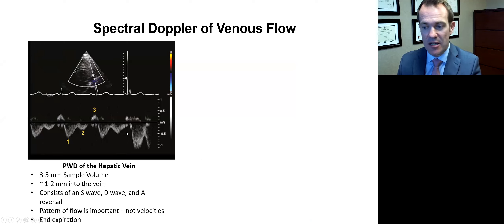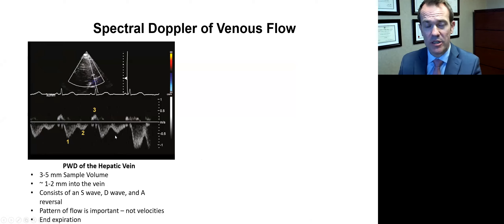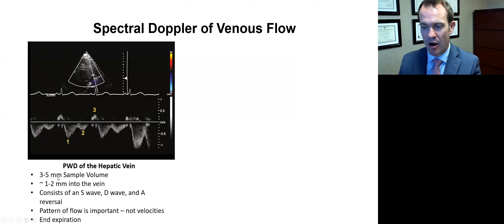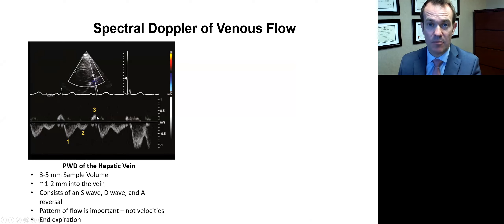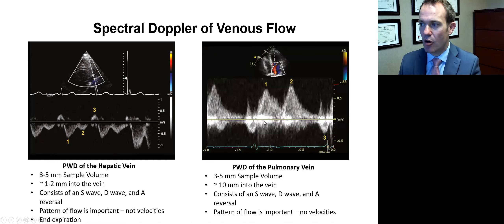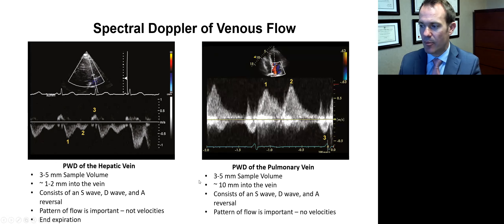When looking at venous flow, we look at the hepatic veins, particularly important for problems with the right ventricle, tricuspid valve, or pericardial disease. We use a three to five millimeter sample volume, about one to two millimeters into the vein. We'll see an S wave going away, a D wave, and then an A reversal as the right atrium contracts and pushes blood back into the hepatic vein. We're more looking at the pattern of flow rather than velocities, and it's a very similar pattern for the pulmonary vein with an S wave, D wave, and A reversal.